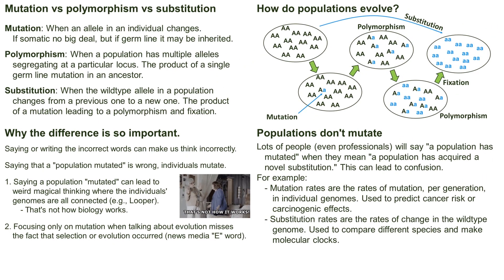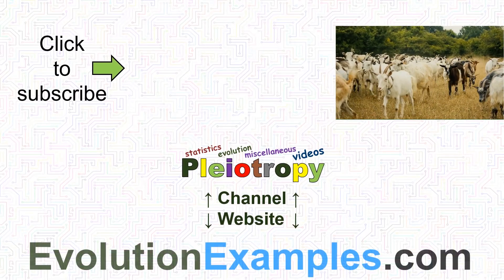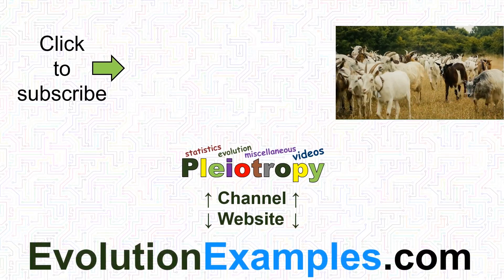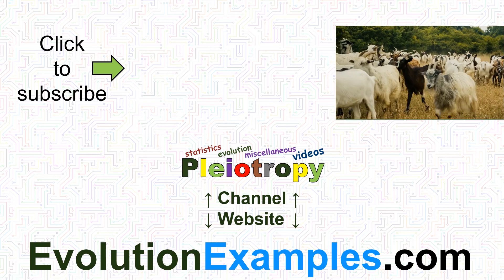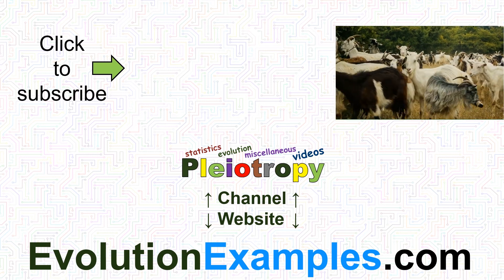Populations don't evolve by mutating. They evolve by experiencing mutations that become polymorphisms that increase in frequency and fix to generate substitutions. A PDF of this summary screen is available on the Evolution Examples website. If you found this useful, feel free to share it, and like and subscribe to easily find this channel again and see new videos.